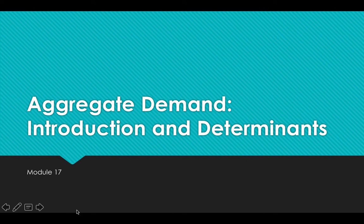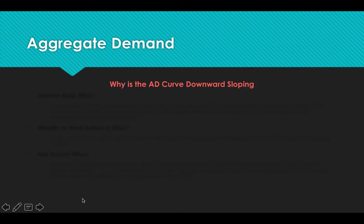Okay, so here we are, Module 17, Aggregate Demand, and the things that shift aggregate demand. Why is the aggregate demand curve downward sloping? There are three main reasons.